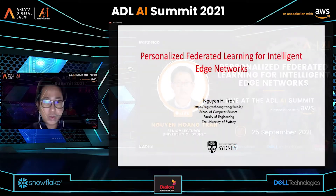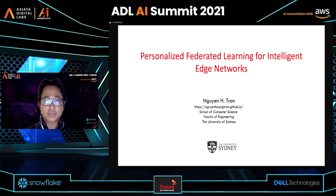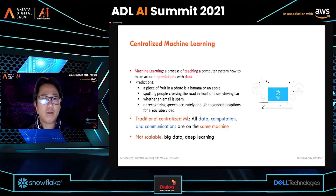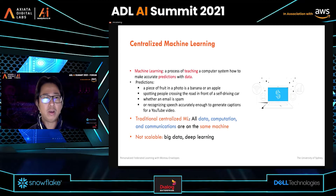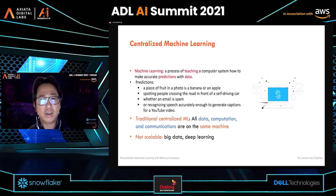I will present one of my latest research on the personalized federated learning model for intelligent edge networks. This is the outline of our talk. Before discussing recent achievements on personalized federated learning, I will introduce the concept of centralized machine learning. Machine learning is the process of teaching a computer system how to make accurate predictions with data.